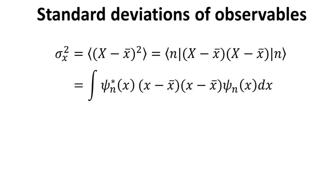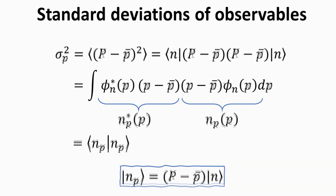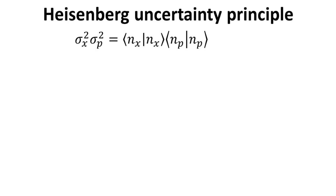Using the position representation, the n bra and ket can be written in terms of the wave function, and the position operator replaced by its eigenvalue. For more compact notation, we define the function |n_x⟩ as shown, allowing us to write the variance in x as the inner product of n_x. Following through the same math, we can also express the variance in p as the inner product of |n_p⟩. Thus, we can write the product of the variance in x and variance in p as the inner product of n_x multiplied by the inner product of n_p.